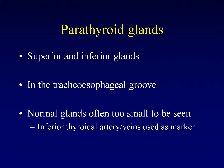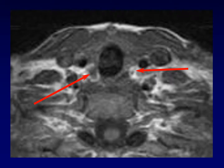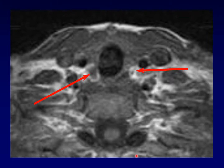Sometimes the glands are large enough to be seen, even when they aren't affected by adenomas. Here's what we're looking for. On the left, we're seeing the vascular structures in the tracheoesophageal groove — the artery and vein. On the other side, we can make out the parathyroid gland itself, even though it's not truly an adenoma in this patient. The key location is in the tracheoesophageal groove, right behind the thyroid gland.